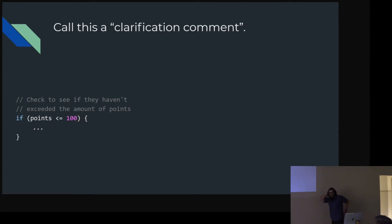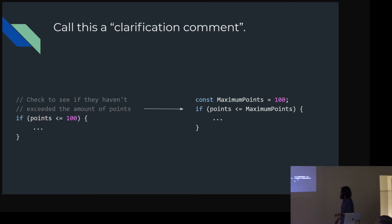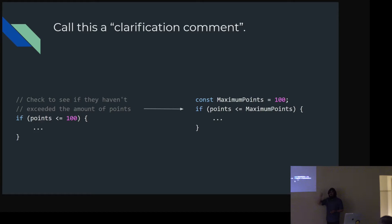I call these 'clarification comments' — they're supposed to clarify something but there's a better way. If you're trying to explain 'it's checking if they have enough points,' don't write a comment — have a variable that tells you what it's checking. That way you can read 'if points is less than or equal to maximumPoints' — it's much easier than reading a comment. This also helps get rid of magic numbers. You shouldn't have raw numbers like 100 or 12 — I don't know what that is. Refactor them into a constant variable so it's clear this is the maximum amount of points.